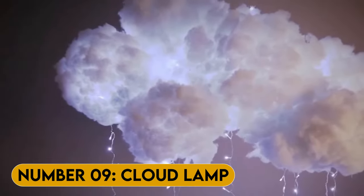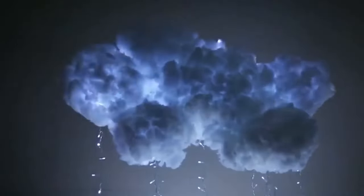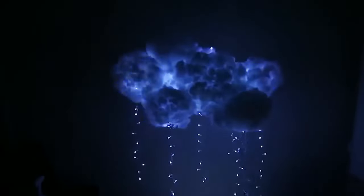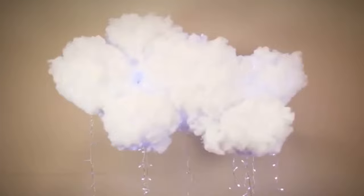Number 9. Cloud Lamp. After setting this up, all you're going to see is a fluffy white cloud that gives off a warm, cozy glow. And that's perfect for creating a relaxing atmosphere in your bedroom. The light is not too bright nor too dull. It's just right. So whether you want to read a book or just chill, this lamp is perfect for all your moods.